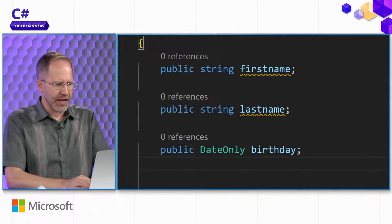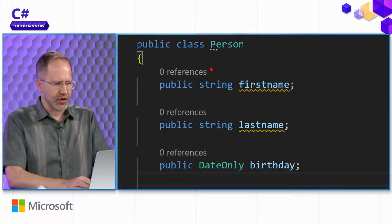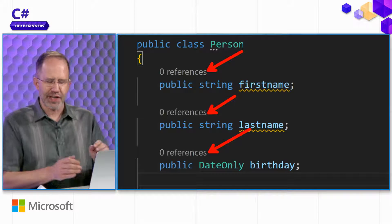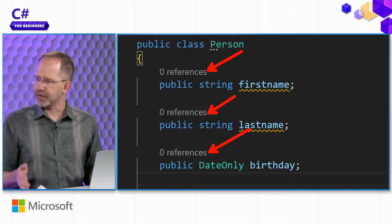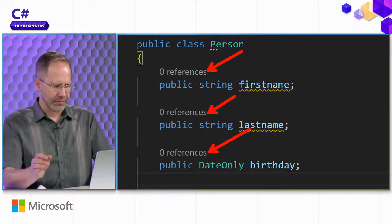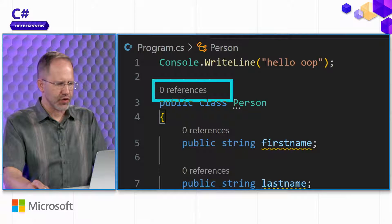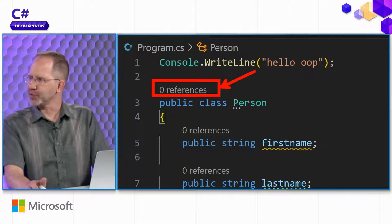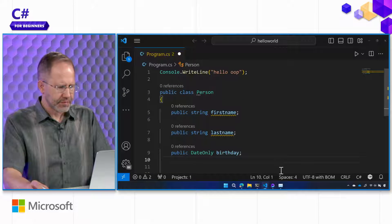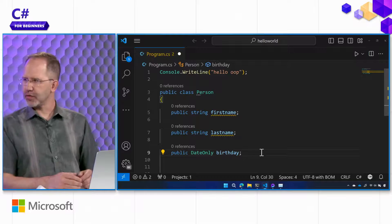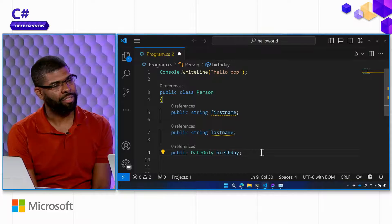I also want to point out that the dev kit is showing us this little extra piece of text that we did not type. I did not type 'zero references' — that's just there to tell you if anyone is using that thing. Right now no one's using person.